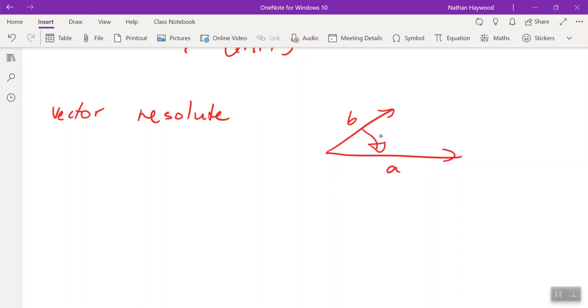Or you can get B parallel to A, or you can get the vector resolute of B perpendicular to A. So like kind of opposite projection. So these are both vector resolutes, and these are the formulas.